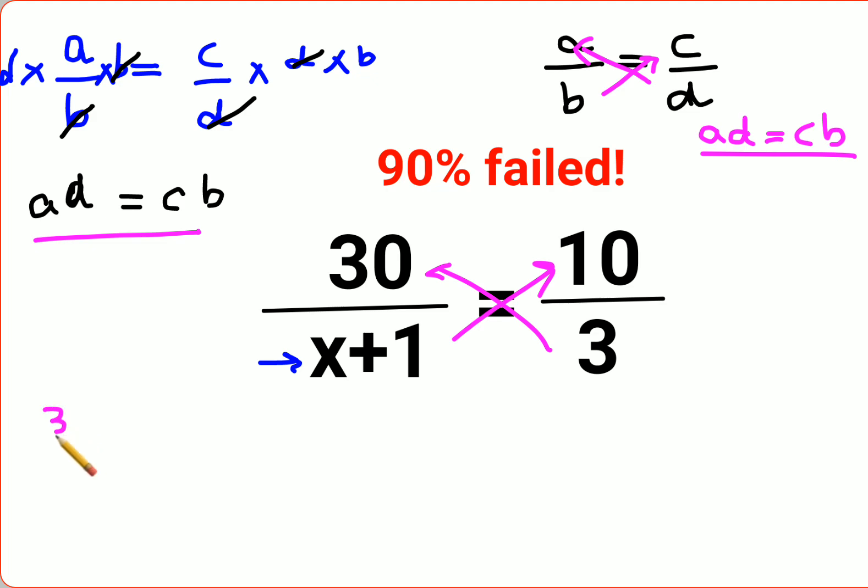So here we have 30 into 3 equals to 10 into x plus 1. Now see, at this step itself you should have gotten the answer. I'll show you how. Here ideally you would have multiplied this, made it 10x plus 10. Yes, that's not wrong. That is not wrong at all.